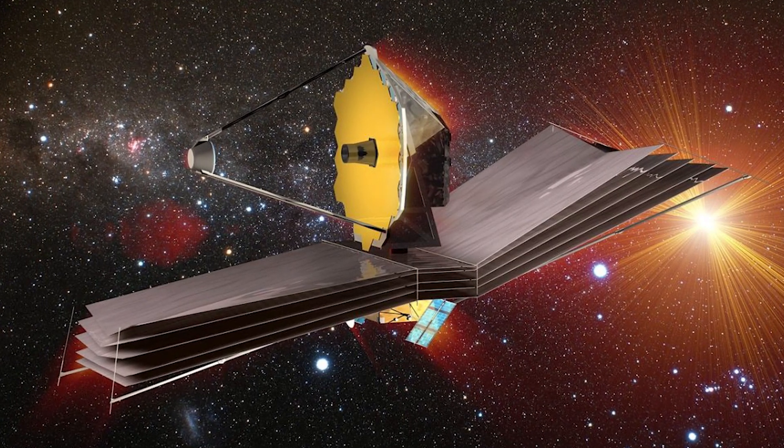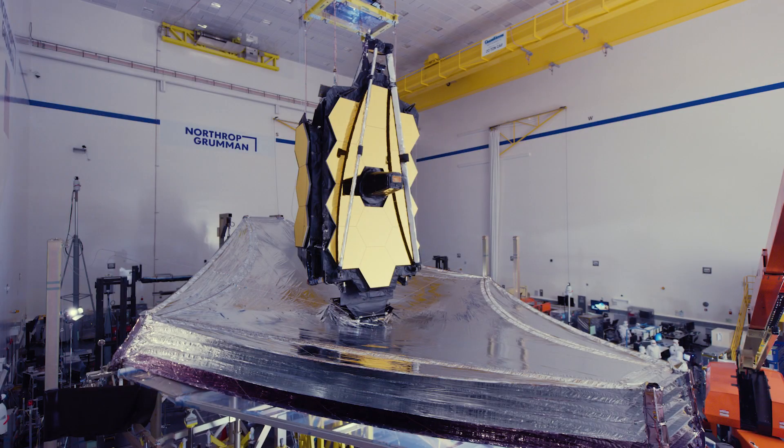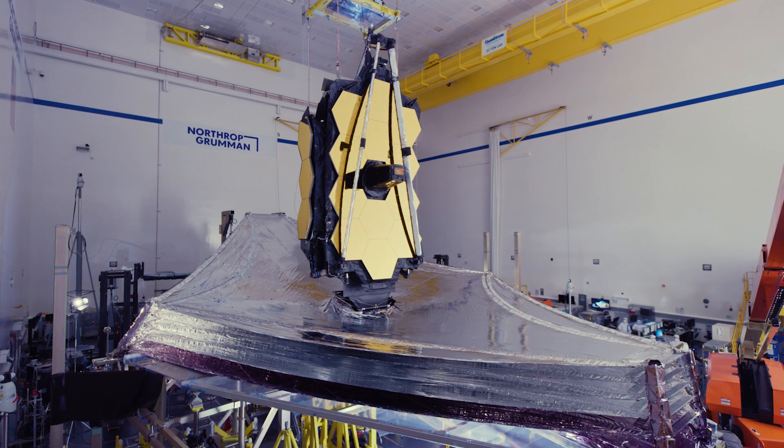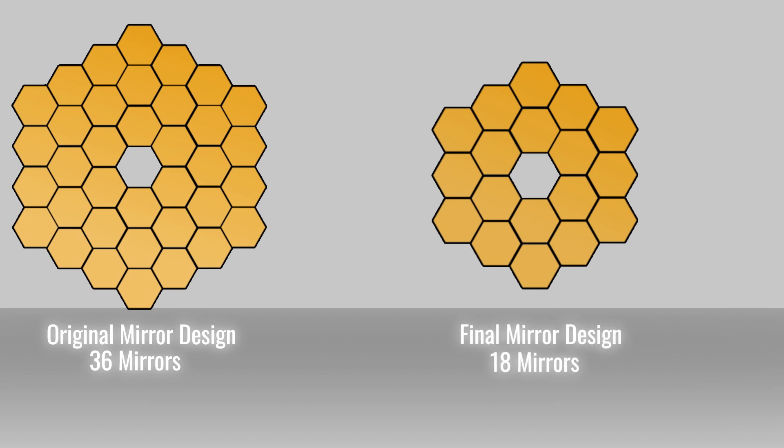Even after the official design was selected, further modifications needed to be made to achieve Webb's final structural design. If you look at the earliest real design of the telescope from an architecture standpoint, it's not a whole lot different from what we ended up flying in space. The only real change was to the size and how we configured the primary mirror itself. The original design had 36 individual mirror segments, but we ended up flying just 18 — a pretty big reduction.